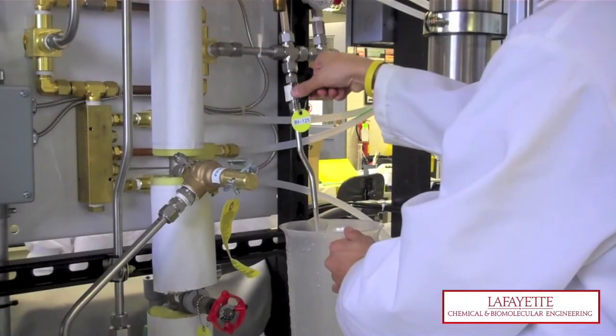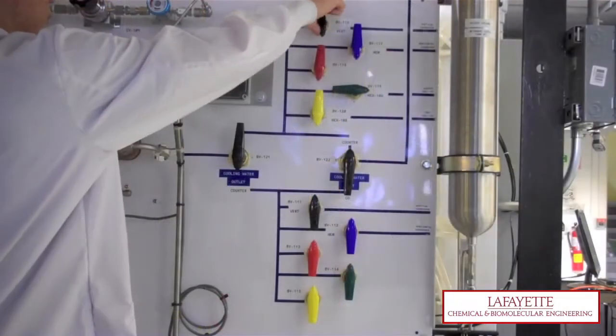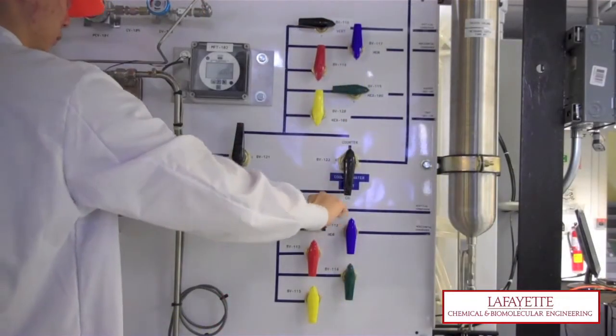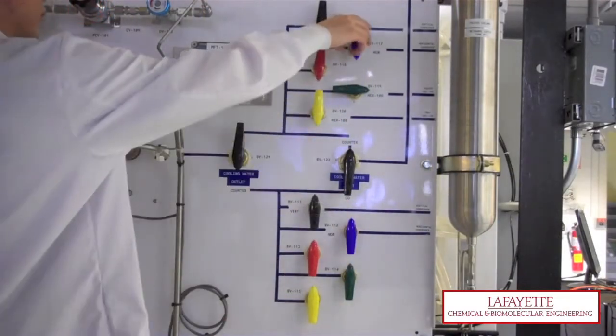The plant may be run in up to 16 different configurations by mixing and matching the different columns, reboilers, condensers, and cooling water arrangements.